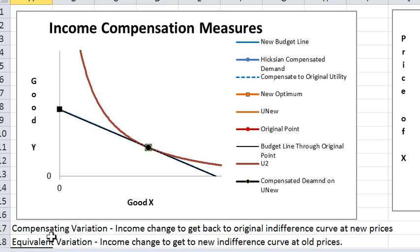So we're going to develop two different concepts. One's called the compensating variation, which is the income to get back to the original indifference curve at new prices, and the equivalent variation, which is the income change to get to the new indifference curve but at the old prices. Those are not necessarily the same.